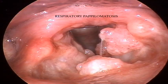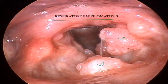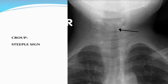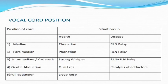This is one of the images that could be asked — respiratory papillomatosis. This was the x-ray of croup with the steeple sign — you can see it getting tapered here. And this was the other topic I mentioned — vocal cord positions in healthy and diseased conditions.